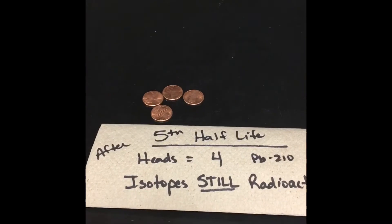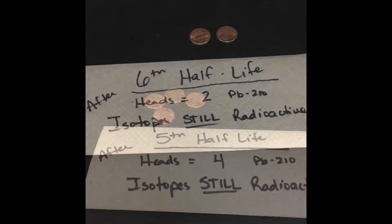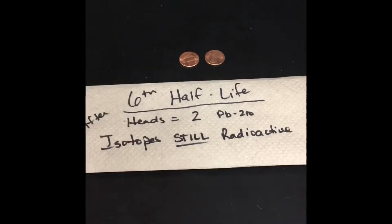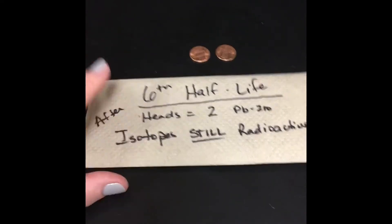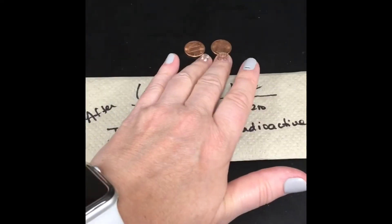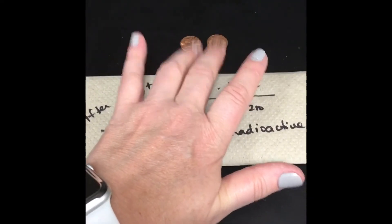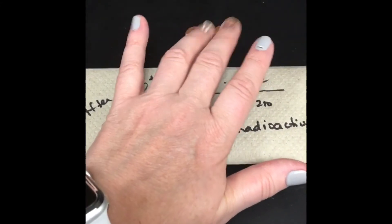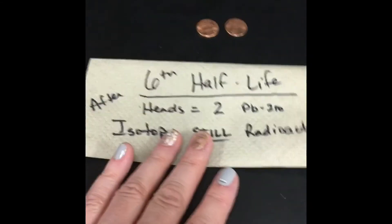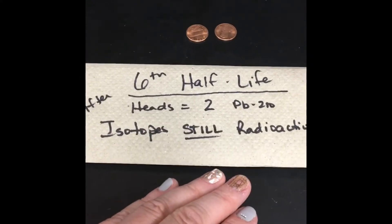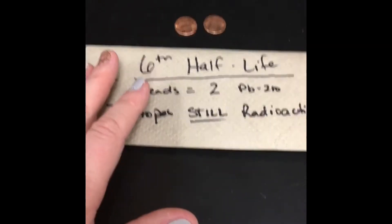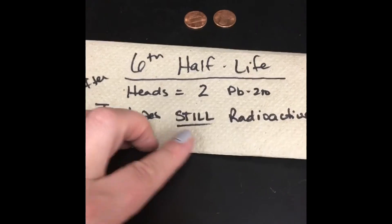Now we're going into our sixth half-life — another 22-year time warp. Now we're at the end of our sixth half-life, and I have just two radioactive isotopes remaining. Most of it has decayed. I think we actually have enough data now to get a good idea of what the decay curve would look like for this isotope.